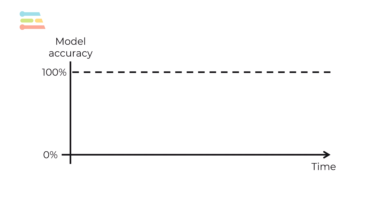Let's say you capture statistics about how well your model is performing in the field and you plot its accuracy. You will likely find that the accuracy will slowly drop over time. This might be days, weeks, months, or even years.